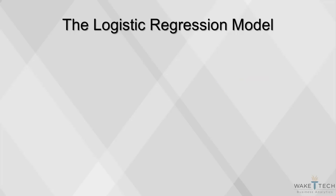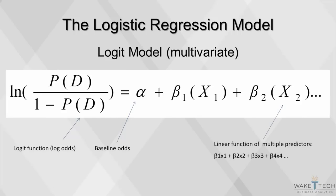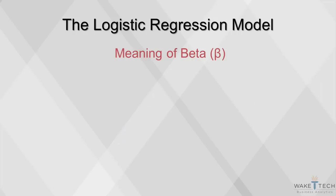The same model can be extended to more than one variable; we just add more predictors to the equation. The coefficient beta measures the impact of x on the log of the odds ratio. For example, in linear regression, if y equals 2 plus 3x, a 1 unit increase in x will increase y by 3 units.